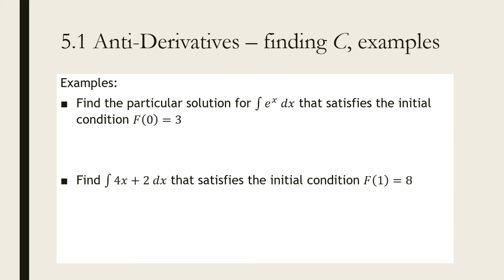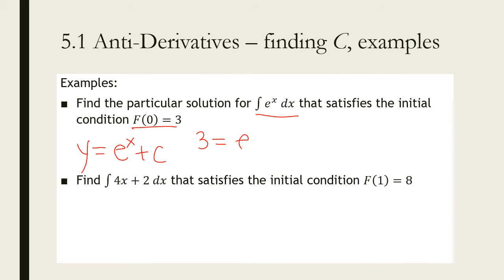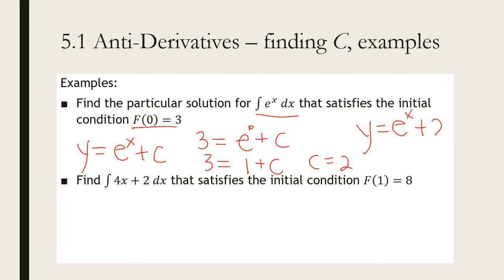Let's do one more. We're going to find a particular solution for e^x that satisfies this initial condition. The antiderivative of e^x is e^x, so Y equals e^x plus C — no exponent magic needed. Now I'm going to plug in 0 for x and 3 for Y: 3 equals e to the 0 plus C. Anything to the zero is 1, so 3 equals 1 plus C, meaning C equals 2. The final function is Y equals e^x plus 2.